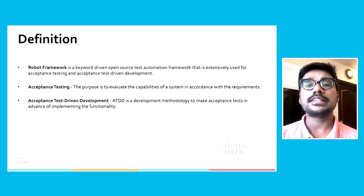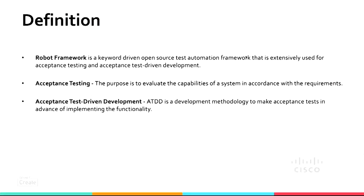The second use is acceptance test-driven development — a methodology in which testing goes hand in hand with implementation of the functionality, as opposed to the conventional approach where implementation is done first and then testing starts. So Robot Framework is essentially used in acceptance testing and acceptance test-driven development, but in a lot of other places in the ecosystem as well.